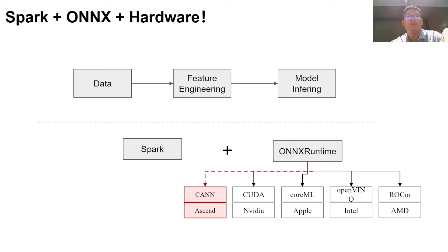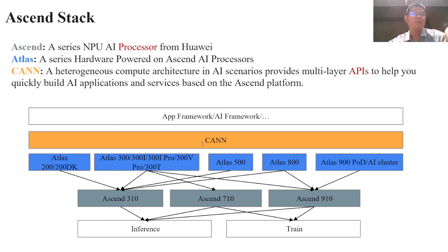ONNX Runtime is an inference platform to optimize and accelerate machine learning inferencing, especially by providing a well-defined middle layer. It builds a bridge between the underlying AI acceleration hardware and model inference with ONNX format. Huawei has its own AI processor called Ascend. So, if we want to complete the Spark and ONNX pipeline on the Ascend platform, we should introduce Ascend support in ONNX Runtime first.